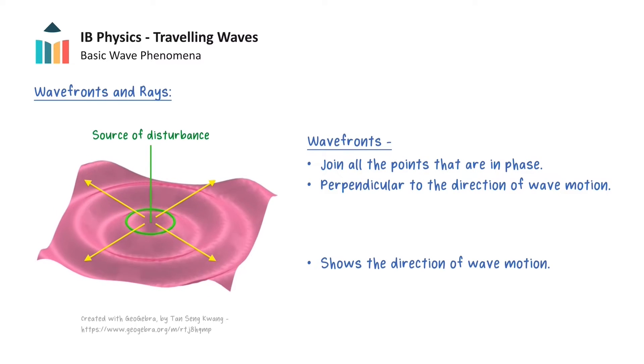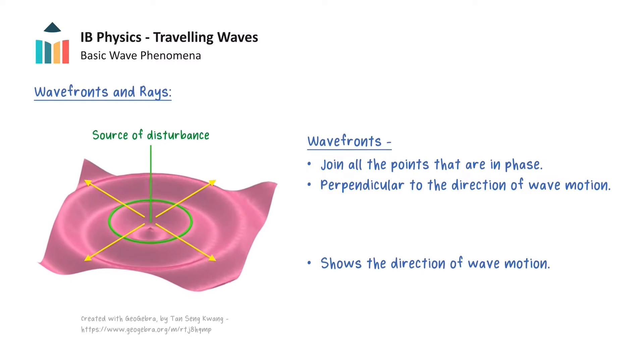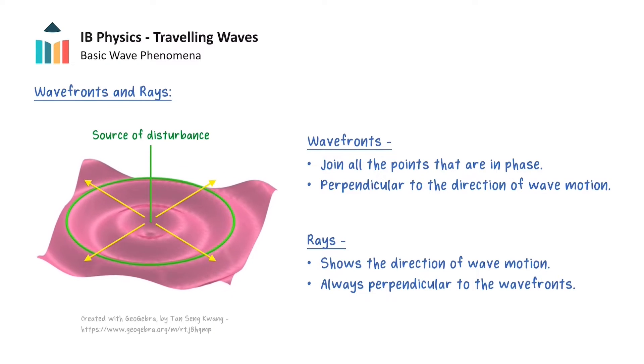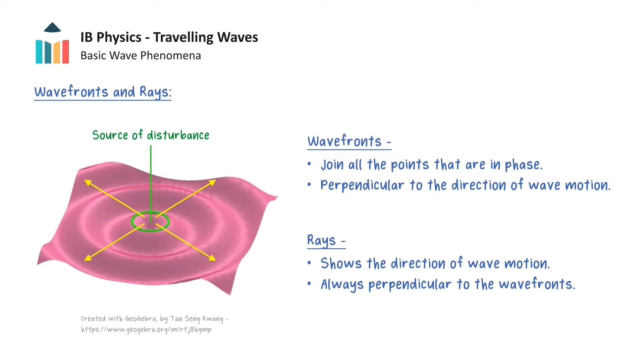Now let's draw these lines that show the wave's direction of travel. These lines are called rays and are always perpendicular to the wavefronts. We will now be able to represent waves using wavefronts and rays.